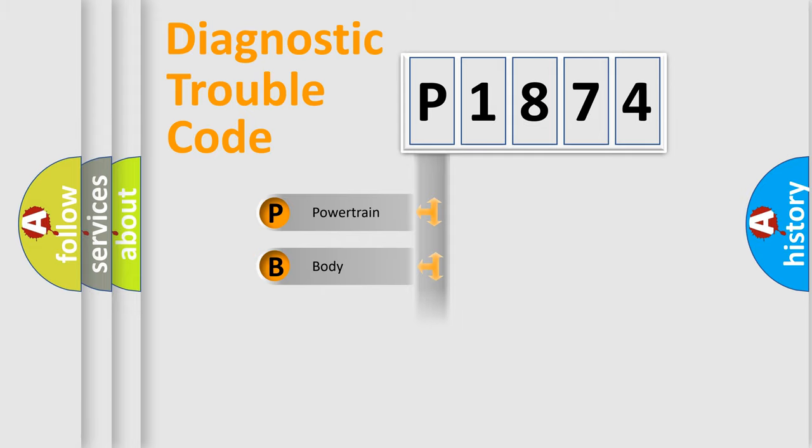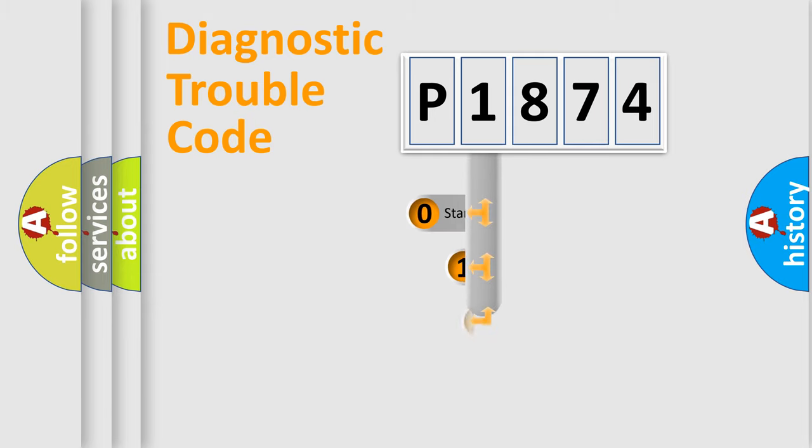Powertrain, Body, Chassis, Network. This distribution is defined in the first character code.